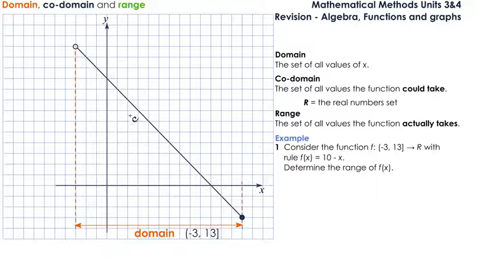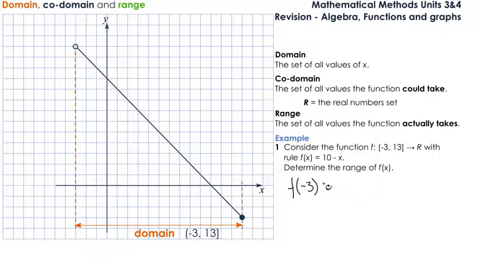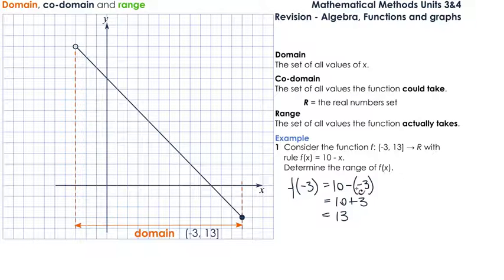To calculate the range of a linear function is quite easy. All you have to do is calculate the value of the function at the two ends. For a linear function, this is always how you determine the range. So f(−3): we substitute negative 3 into the equation — 10 take away negative 3 equals 10 plus 3, which is 13. I always substitute negative values in brackets. Then f(13) equals 10 take away 13, which is negative 3.